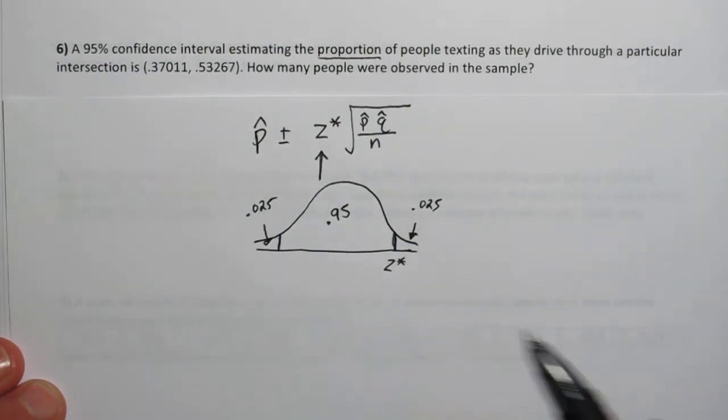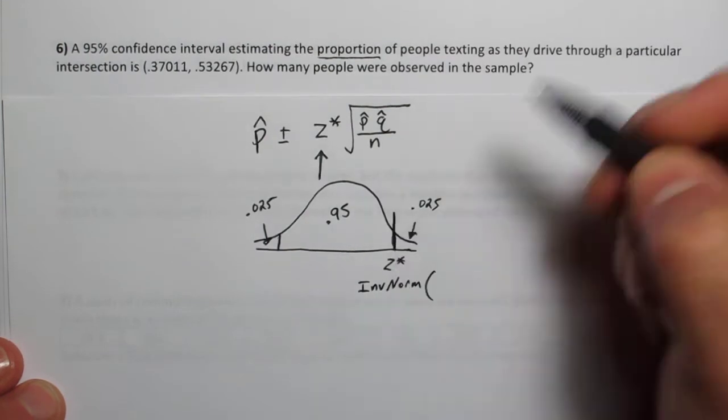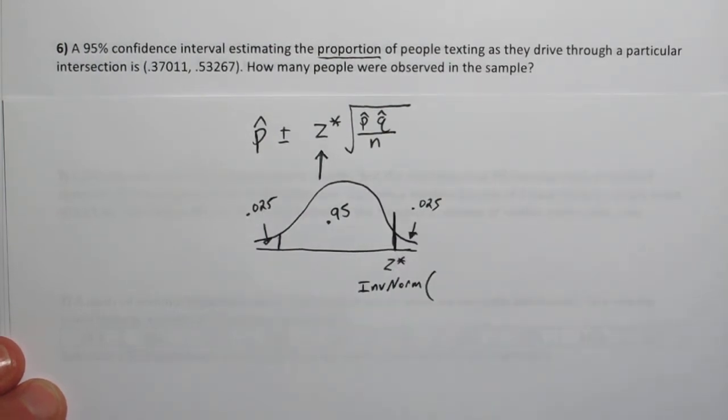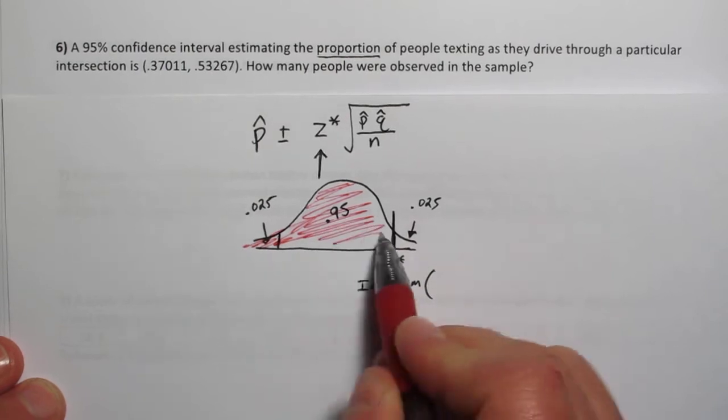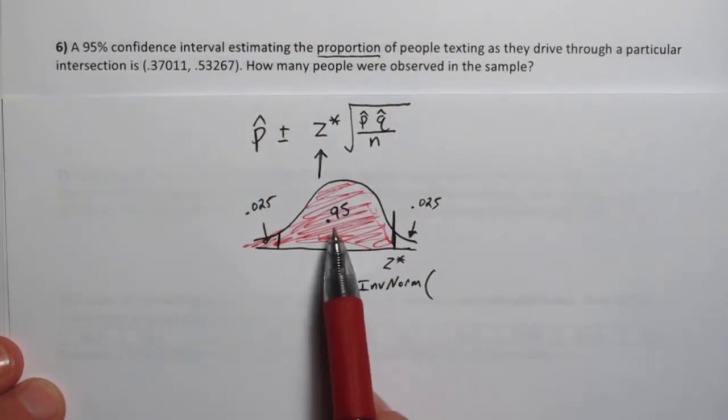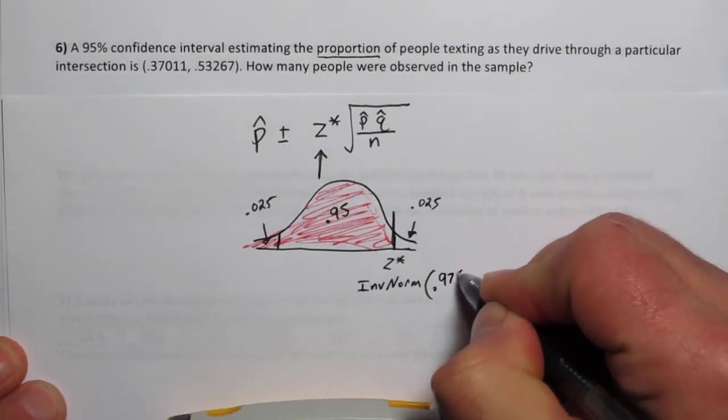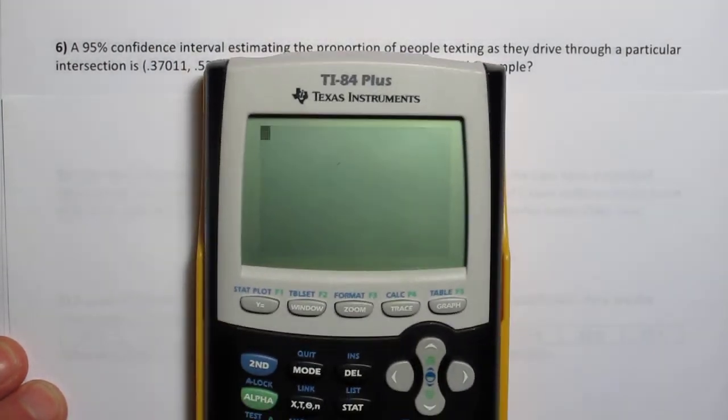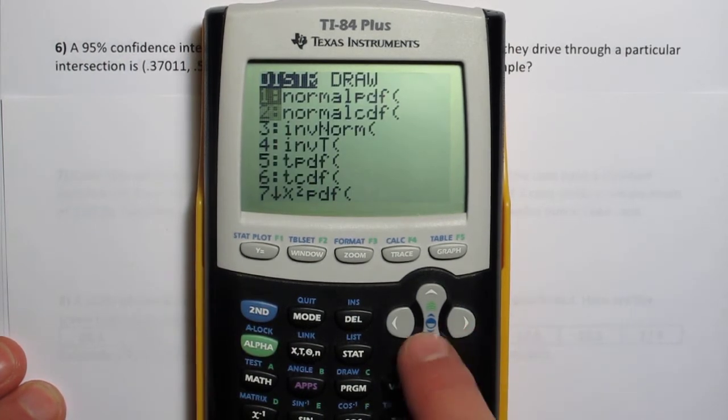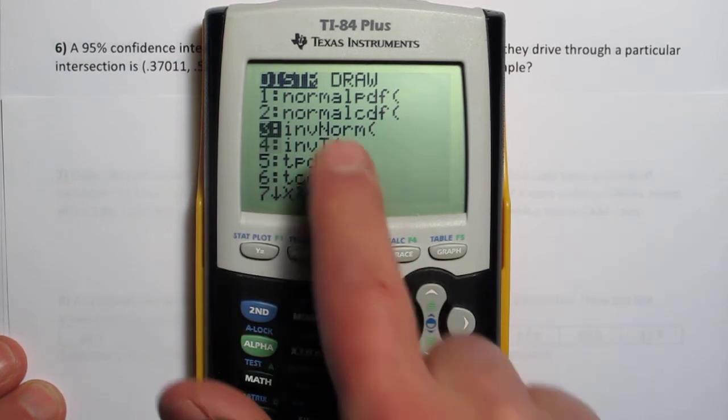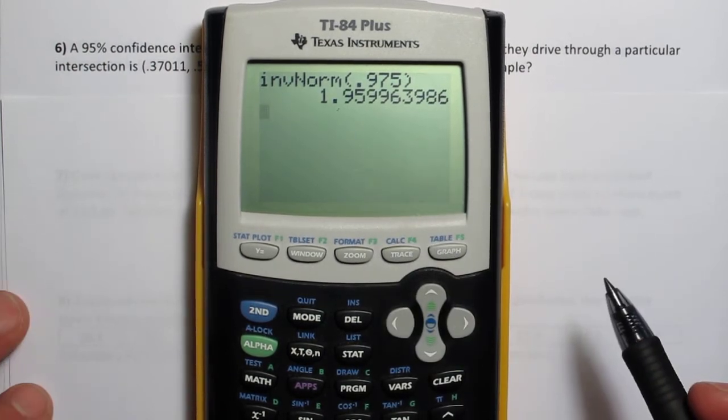That's because the area under this entire curve has to add up to 1. So the tail areas must be 2.5%. When we use inverse norm, what it does is it tells us the area to the left of some cutoff value. So if we want z-star to be right there, that cutoff, we have to tell inverse norm this area right here. This area is 0.95 plus 0.025. So we're going to inverse norm 0.975. And what that gives us is, so to do inverse norm, push second, and then the vars button, which gets you to the distribution menu. Inverse norm 0.975. So z-star is 1.9599.